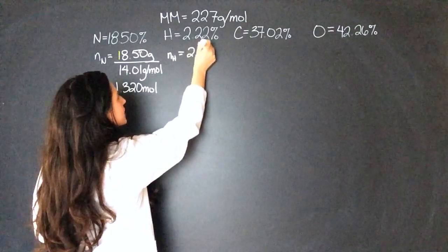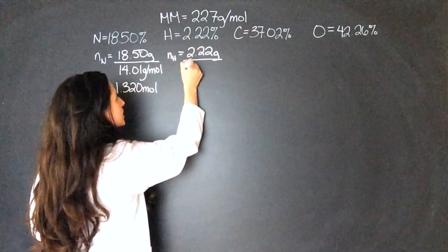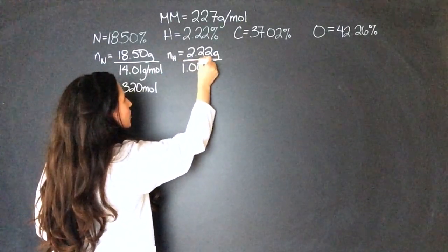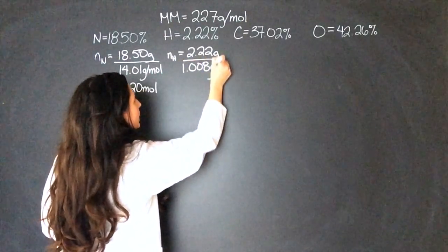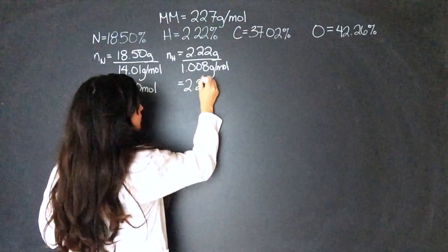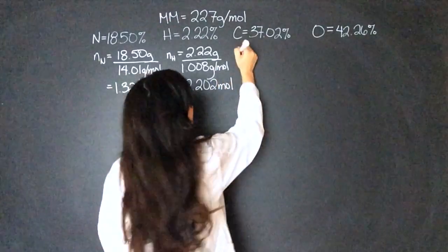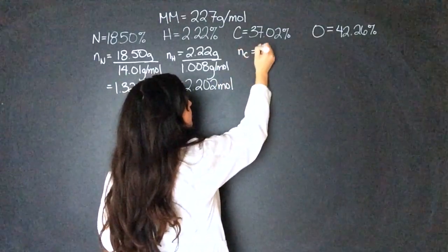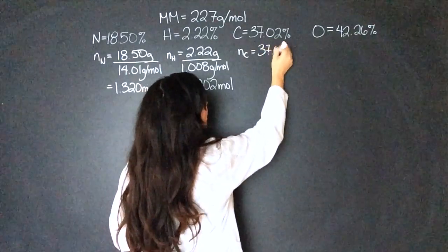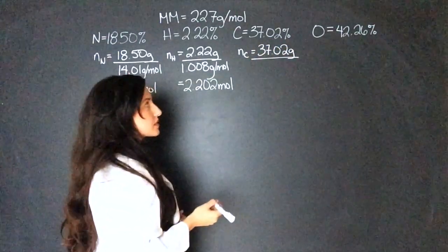The moles of hydrogen equals 2.22 grams over the molar mass of hydrogen, which is 1.008 grams per mole. That gives us 2.202 moles. Now the moles of carbon equals 37.02 grams divided by the molar mass of carbon, which is on the periodic table 12.01 grams per mole.